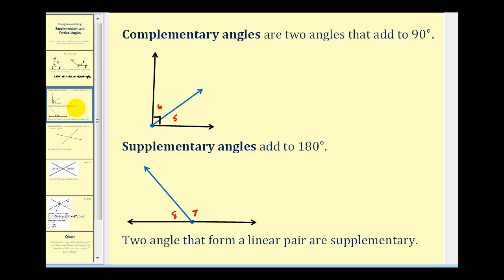Complementary angles are two angles that add to 90 degrees. Looking at the angle formed by the two black rays, this little square indicates it's a right angle, which means it measures 90 degrees. Angle five and angle six are two adjacent angles that form the right angle, and therefore angle five and angle six are complementary.